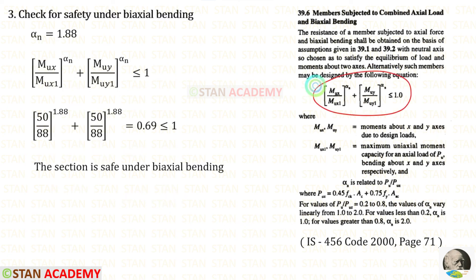Now in this equation, we have found everything. Let us apply the values. When we calculate it, we will get 0.69 which is less than 1. So the section is safe under biaxial bending.